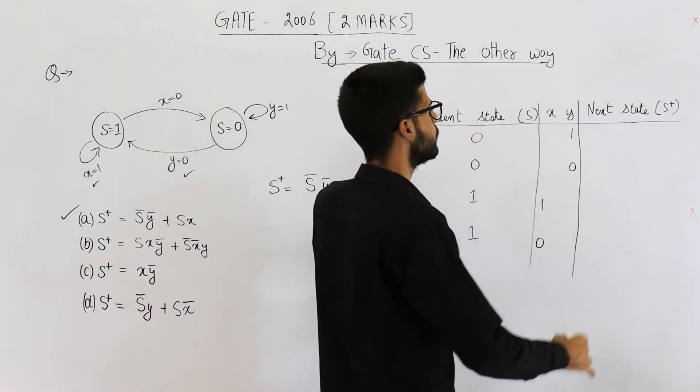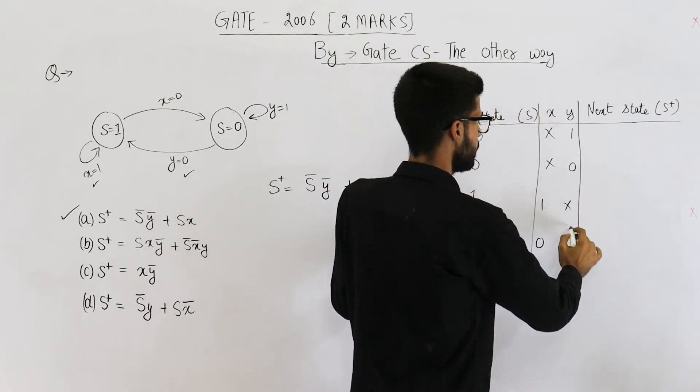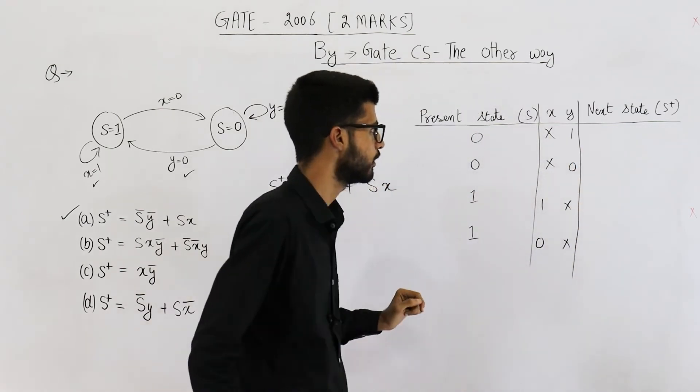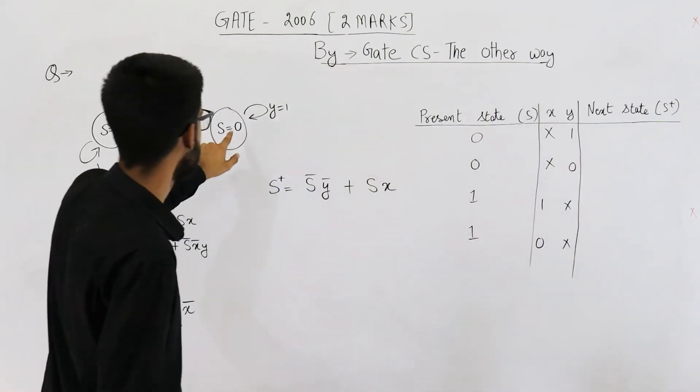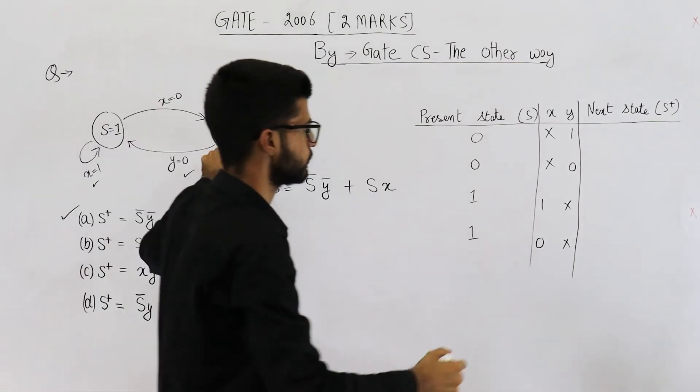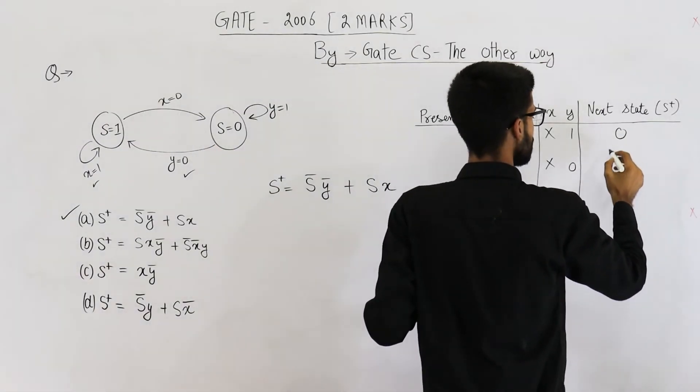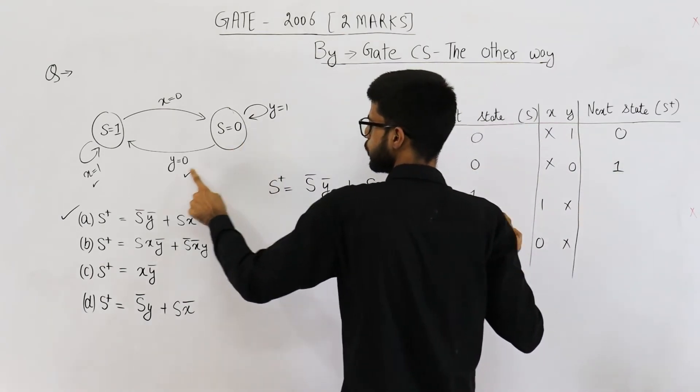Now on state 0 we don't care what x is. This one is don't care. Similarly this one is also don't care. If you are on state 0, y is 1, what is the next state? You are on state 0, y is 1, next state will be 0. Here next state will be 0 but if y is 0, next state is 1. See from here if y is 0 you will reach here.